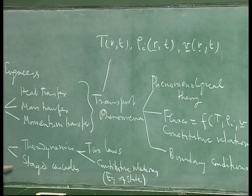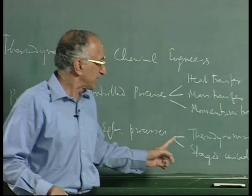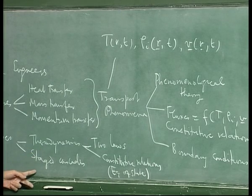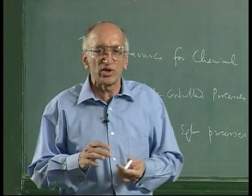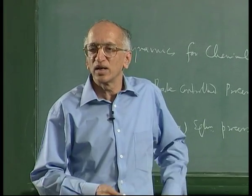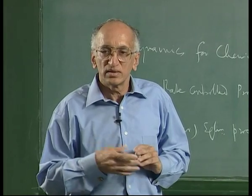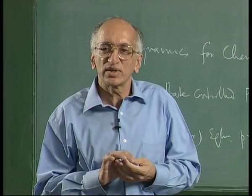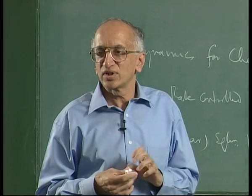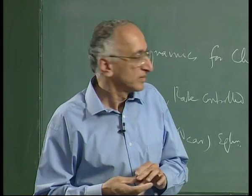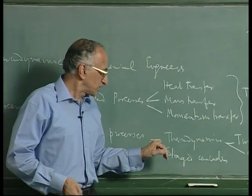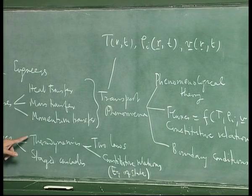What stage cascades does is use mass balance again and thermodynamics. The thermodynamic input in stage cascades is in the form of an equilibrium curve — an equilibrium relationship that is given to you. They will say: analyze this distillation column given that the equilibrium between vapor and liquid is described by this equation. That equation is what you derive in the thermodynamics course.